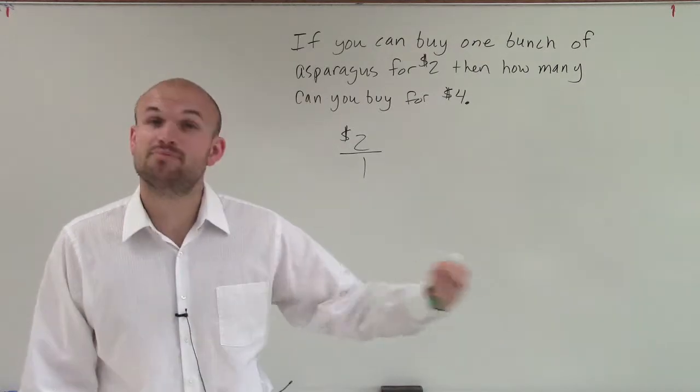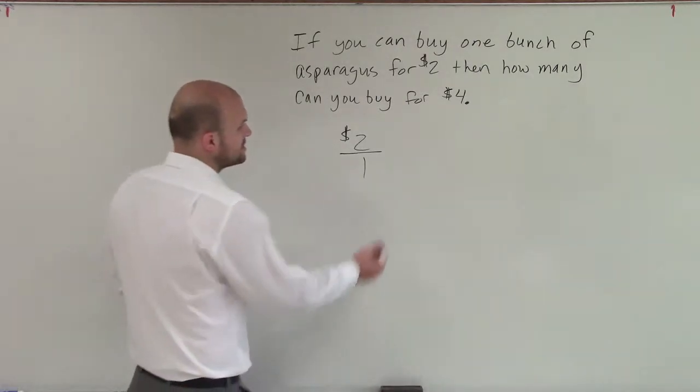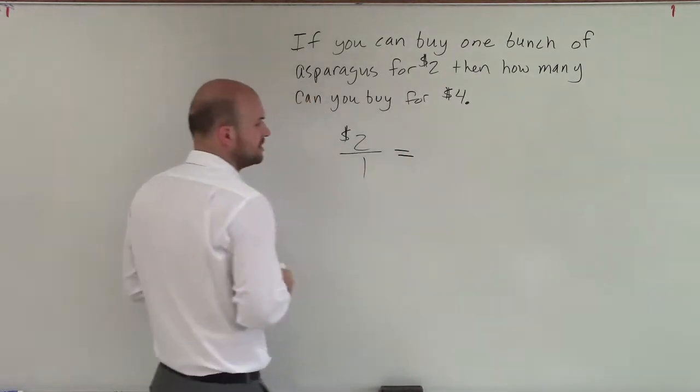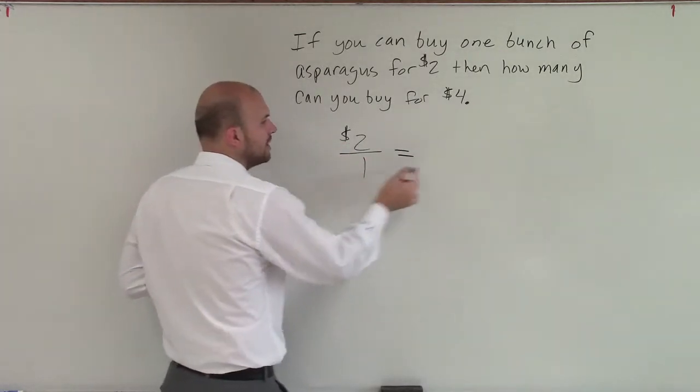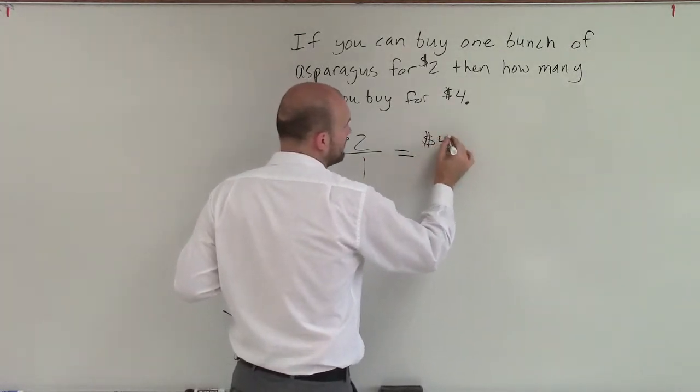And then what we're going to do is create a proportion. A proportion is just when a ratio equals another ratio. So now they're saying, if I know that for $2 I can buy one, how much can I buy for $4?